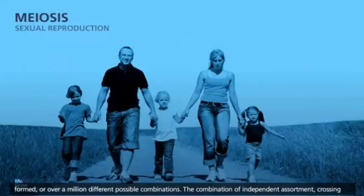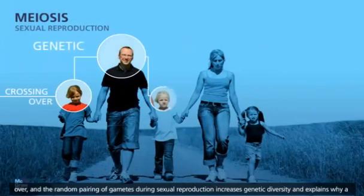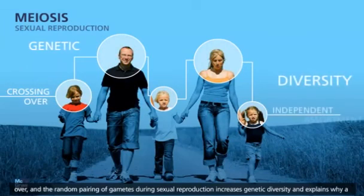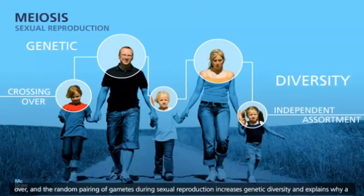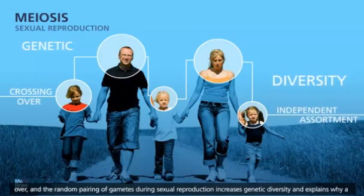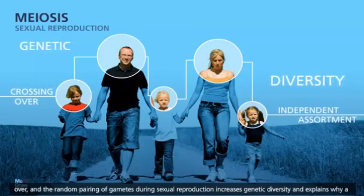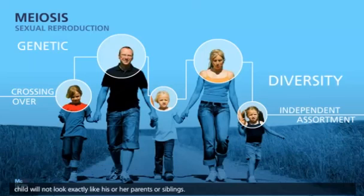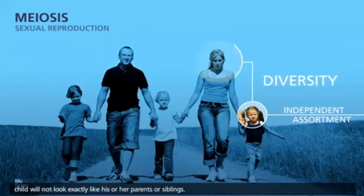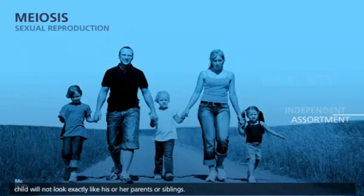The combination of independent assortment, crossing over, and the random pairing of gametes during sexual reproduction increases genetic diversity, and explains why a child will not look exactly like his or her parents or siblings.